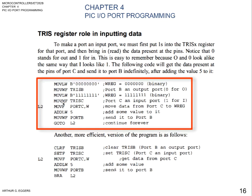The next step is to move from the working register to a file — tri-state C — making port C an input port. Then we do a move file from port C to the working register. Don't forget you've got all your syntax to keep track of in MPLAB. Port C comma W moves the data from port C to the working register. Then we add a literal value of 5 to the working register, move it to port B, and then go to L2 to repeat that forever.